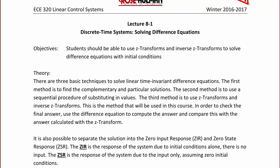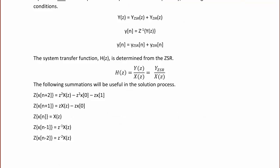In the time domain, when we did differential equations, we would call this the forced response and the natural response. The complete response Y(Z) is the sum of the zero state response plus the zero input response, where Y(N) is the inverse Z transform of Y(Z). So in the N domain, this would be Y(N) = YZSR(N) + YZIR(N).